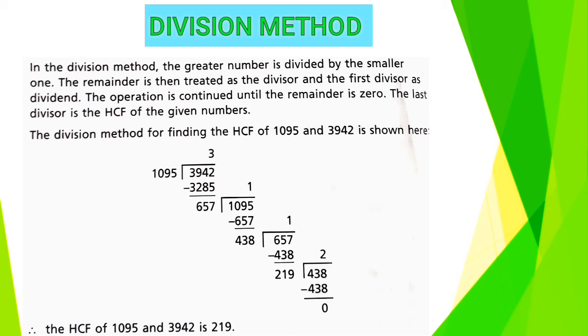And 438 is subtracted from 438, so remainder is 0. Students, you are observing that the last divisor, 219, is the HCF of 1095 and 3942. This is called division method.